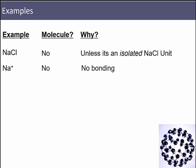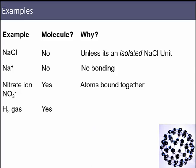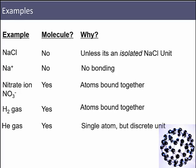Nitrate ion, NO3 minus—is it a molecule? Yes, because it's got atoms bound together into a discrete unit. Hydrogen gas, H2—is it a molecule? Yes, atoms bound together, traveling alone as one unit. Helium gas—is it a molecule? Yes, even though it doesn't have atoms bound together, it's still a discrete unit. The same thing happens with any noble gases. A diamond—is it a molecule? No-ish. It is a covalent network solid, kind of like sodium chloride where we're not really going to call it a molecule, even though it's got bonding between multiple atoms.